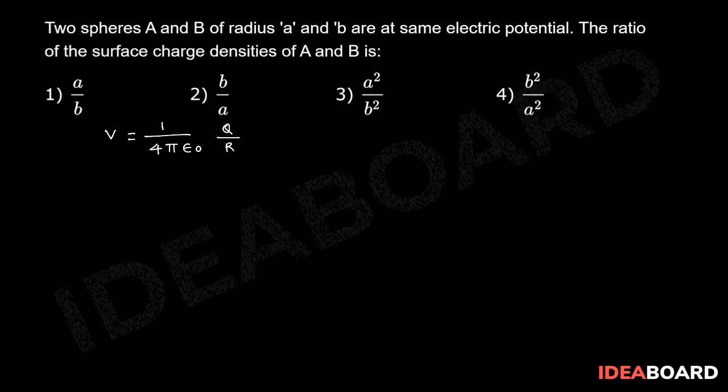Now as per the question, electric potential due to the two spheres are equal, VA is equal to VB. Now here, instead of VA, 1 by 4 pi epsilon 0, this is qA by A which is equal to 1 by 4 pi epsilon 0 into qB by b.